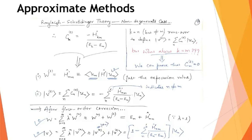This completes the derivation of the Rayleigh-Schrödinger perturbation theory up to first order. We have calculated the first-order correction to the energy and the first-order correction to the state function, for the non-degenerate, time-independent case with discrete energy levels. Next time we will go for the second-order perturbation theory, following the same mathematical approach to gain further understanding about the different orders of perturbation.